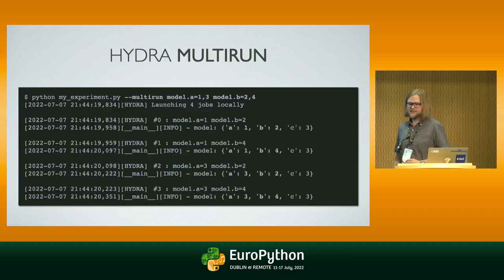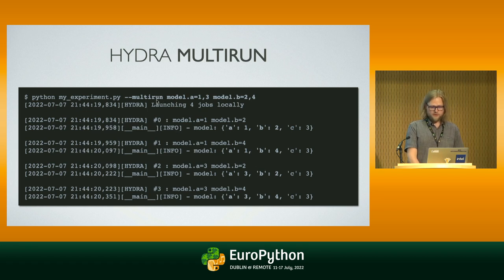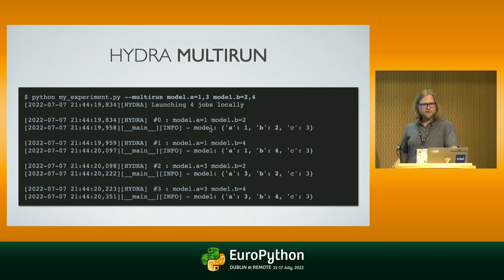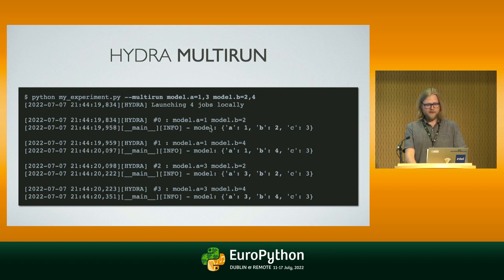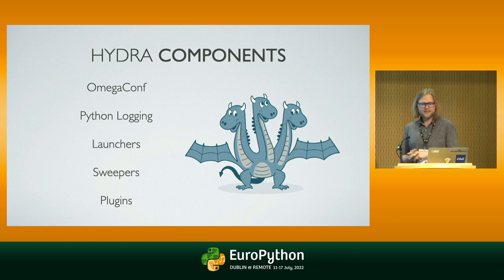Another cool feature of Hydra is multi-run, which allows you to run your experiment with a set of different parameters. For example, you can tell your script to launch multi-run mode and try running with model A parameters 1 and 3 and model B parameter values 2 and 4. It will make all combinations of these values and start four different jobs, running each in sequence by default. You get the results in the output directory of each run and can compare them — so you can sweep through a lot of different parameters this way. With not a lot of additional code, you're getting a lot of features.